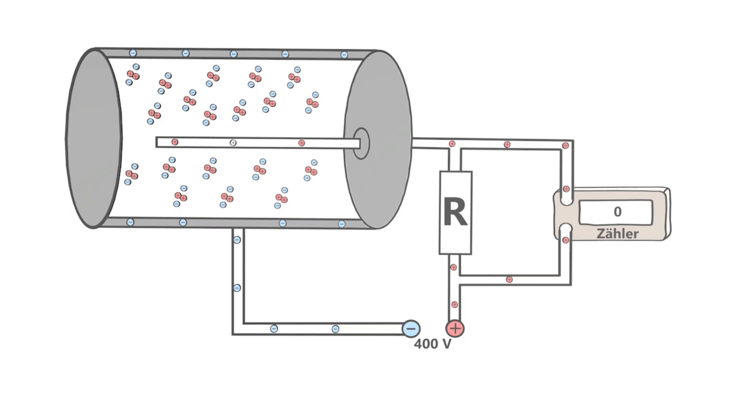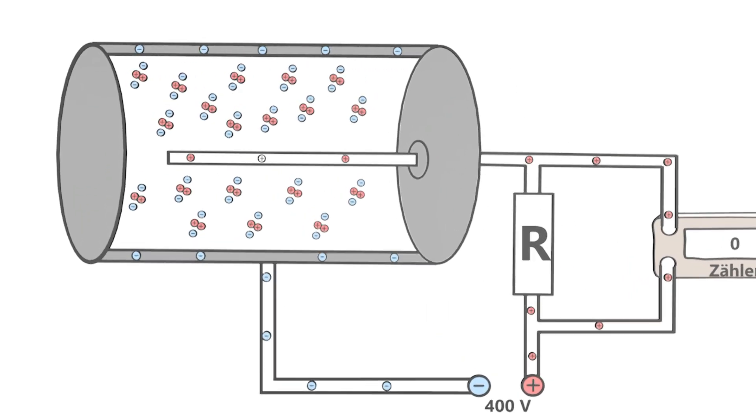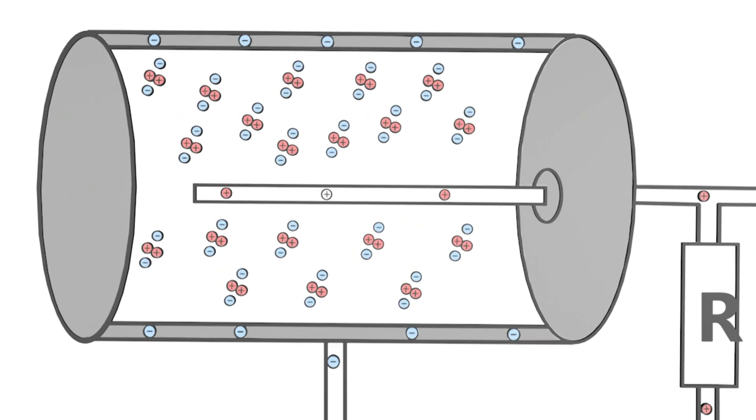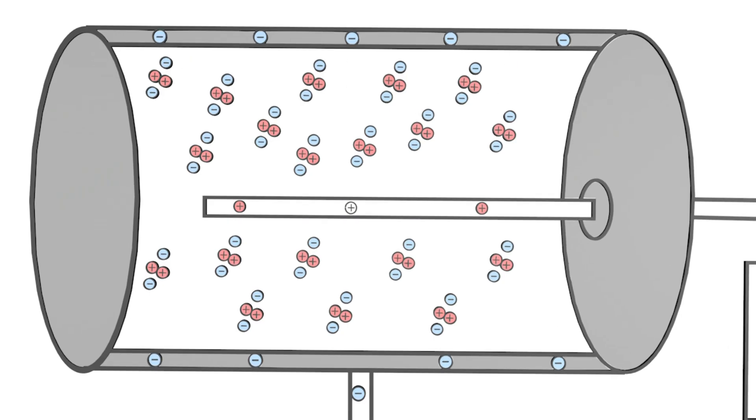Here you can see the structure of such a device. A noble gas is located in a metal cylinder. In the middle of the metal cylinder there is a positively charged wire. The outside wall of the cylinder is negatively charged. How can radioactive radiation be measured?